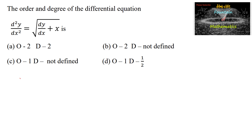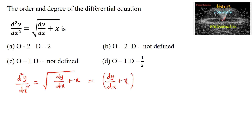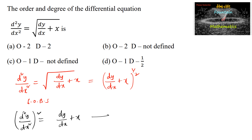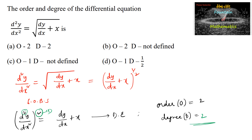The order and degree of the differential equation d²y/dx² equals square root of (dy/dx plus x). Since the right side has a radical power, we square both sides: (d²y/dx²)² equals dy/dx plus x. This is a differential equation where the highest order is 2 and its degree (the power) is 2. So degree is 2 and the highest order is 2, which is option 1.